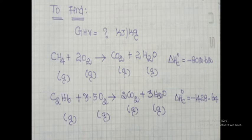The objective is to find GCV (gross calorific value), which is the gross heating value. We have two combustion reactions: methane reacts with oxygen to produce CO2 and water, with standard heat of combustion −802.62 kJ/mol; and ethane reacts with oxygen to produce CO2 and water, with standard heat of combustion −1428.64 kJ/mol.